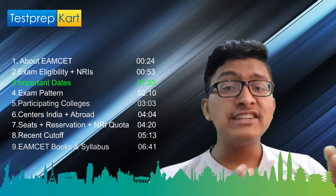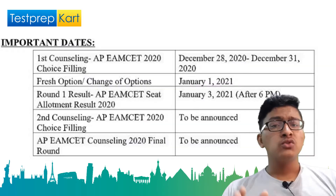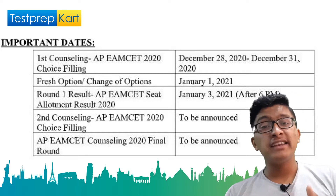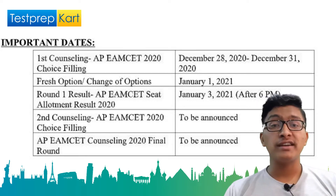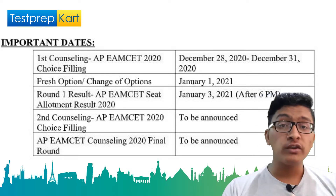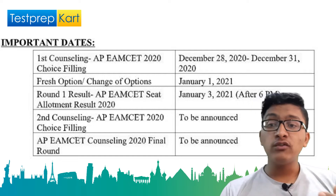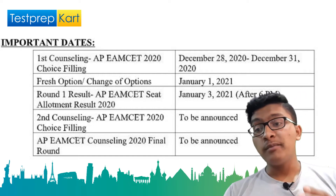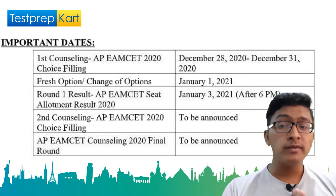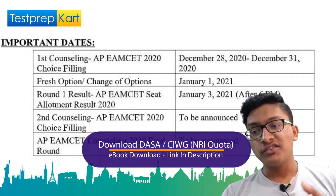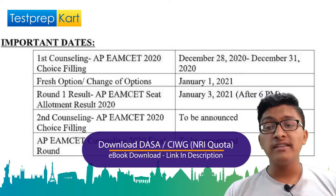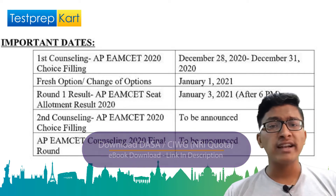There are no official dates till date, but we can discuss some expected dates based on previous year trends. The expected opening date of the application form would be the first week of March 2021, and the closing date would be the first week of April. The admit card would most probably be out in the third week of April, the exam in the second week of May, results in the fourth week of May, and counseling will begin in the month of June.